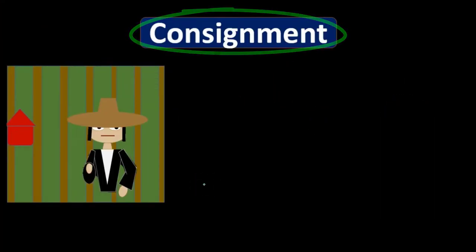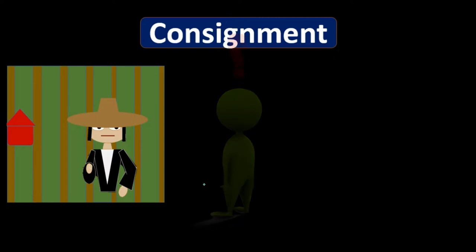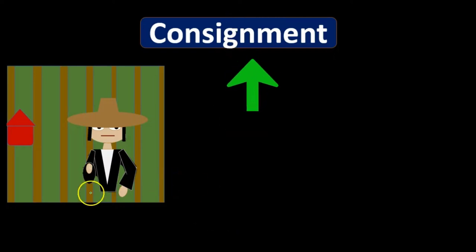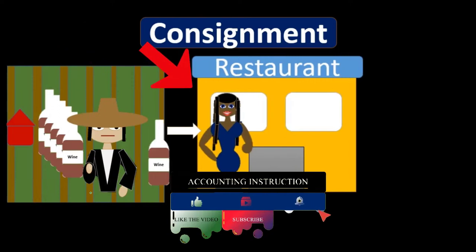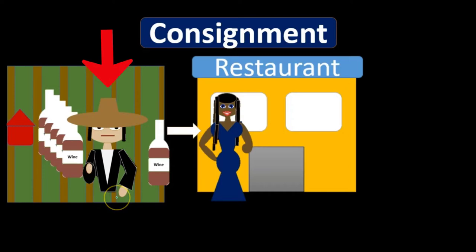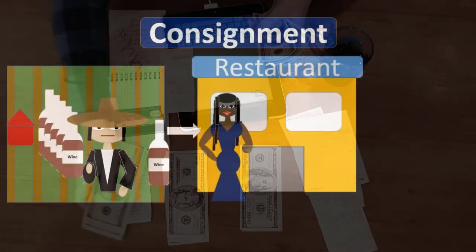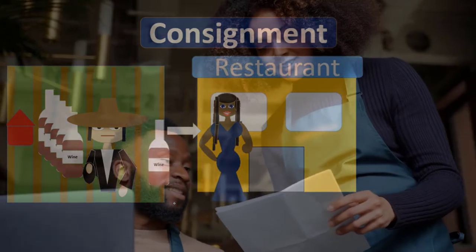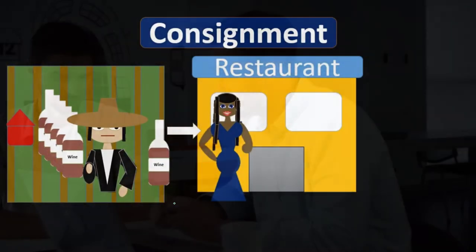Consignment is another thing to keep in mind. Certain industries benefit from this kind of arrangement. For example, if someone had a farm producing wine, they could sell that wine directly to a restaurant, with the restaurant paying and then selling to customers. Alternatively, the producer could arrange for the restaurant to display the wine and only pay the producer if and when it sells — and if it doesn't sell, there's no charge.